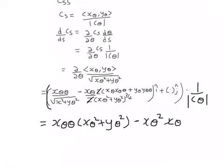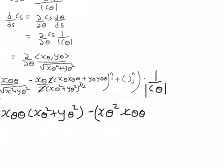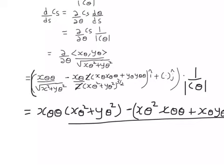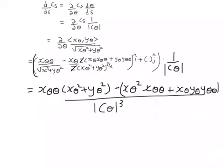We have x_θθ and, in brackets, x_θ·y_θ·y_θθ. The whole thing is divided by |c_θ|³. We can see that certain factors in the numerator and denominator are common and can be cancelled.